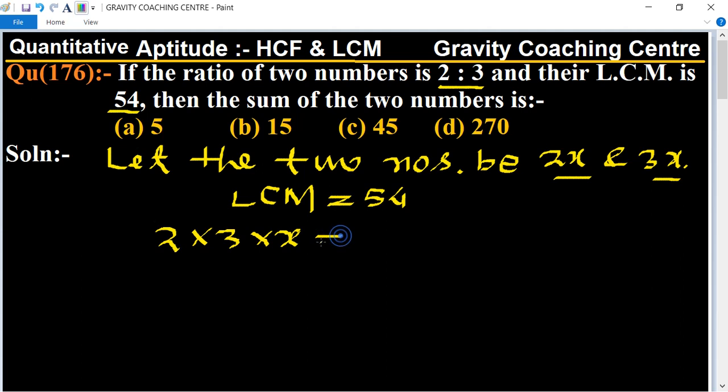So therefore x equals 54 divided by 2 into 3. Canceling 54 by 3 gives 18, canceling 18 by 2 gives 9. So x equals 9.